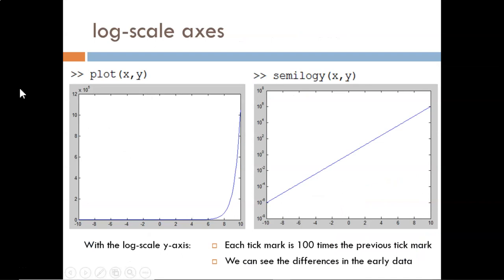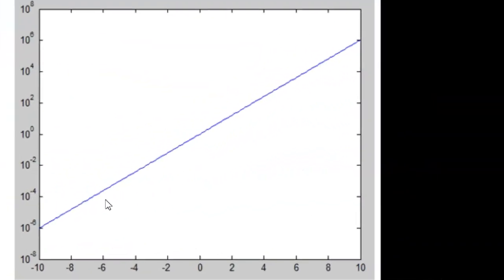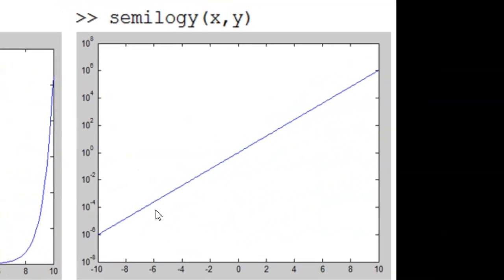So, a better approach would be to use a log scale y-axis. The data in these two figures is the same. But on the right, we are able to see the changes in the earlier data. Notice the scale on this y-axis. Each tick mark is 100 times the value of the previous tick mark. To create this type of plot, with only the y-axis on a logarithmic scale, we use a function called semilogy.